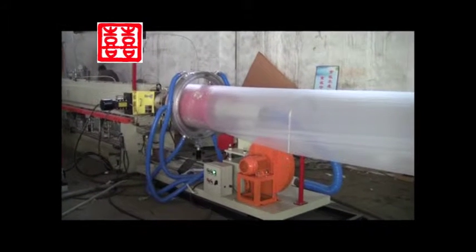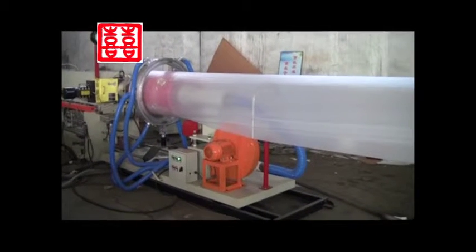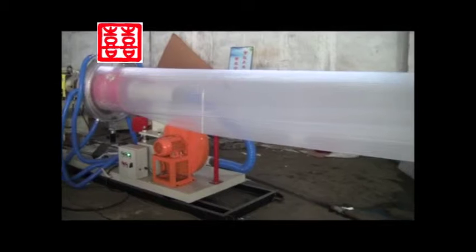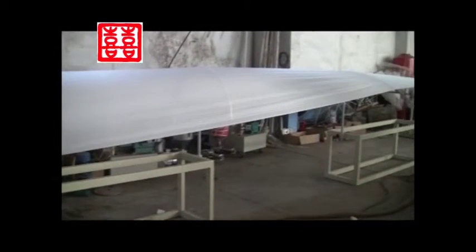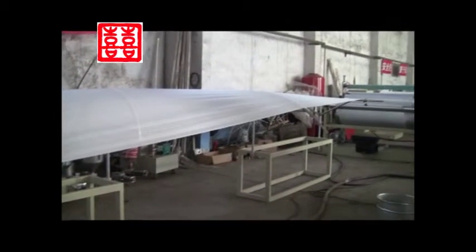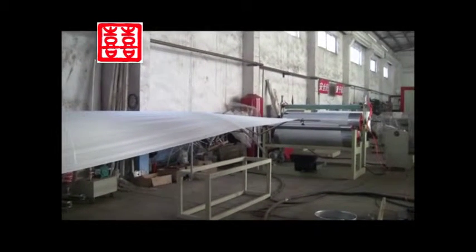EP Foam Sheet Extrusion Line. The raw material of EP Foam Sheet Extrusion Line is high-pressure polyethylene. It is fed into the extruder with length to diameter ratio of 55 to 1 by automatic loading equipment.